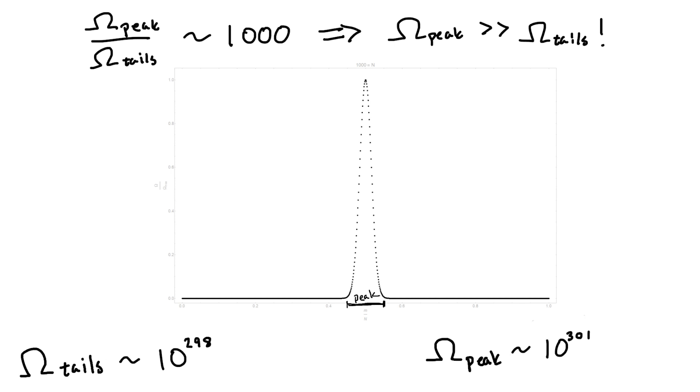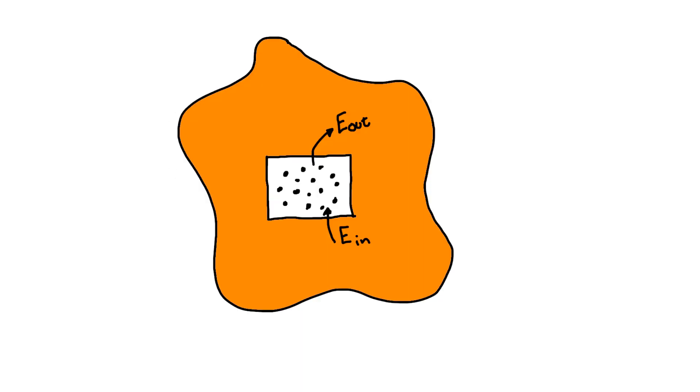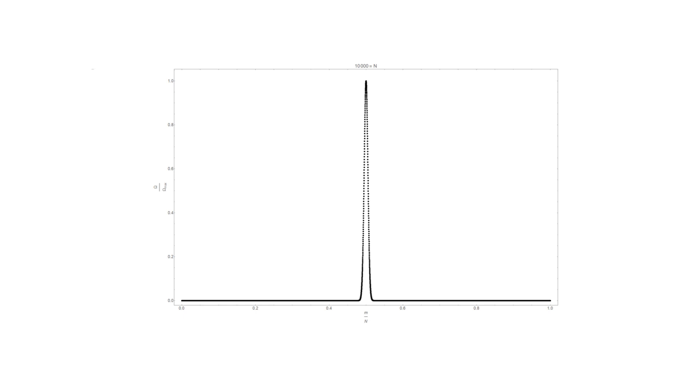In other words, when we bring the system into contact with the heat bath, the entropy will tend to maximize. In fact, this only becomes more true the more particles we add. For n equals 10,000, it is about one million times more likely to find the system in a state which is part of the much sharper peak.